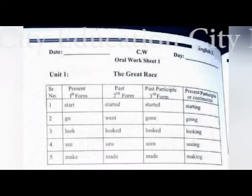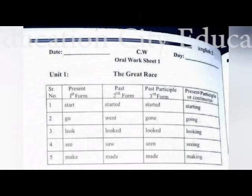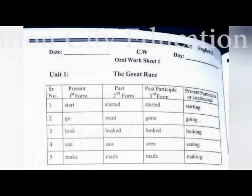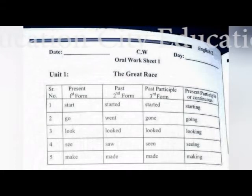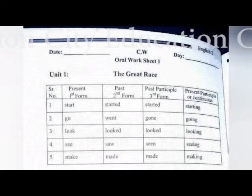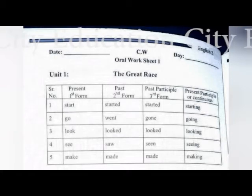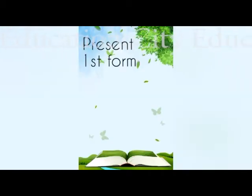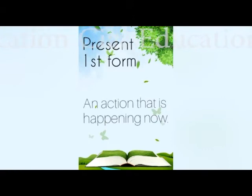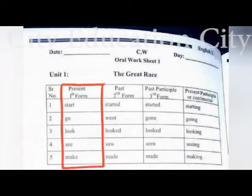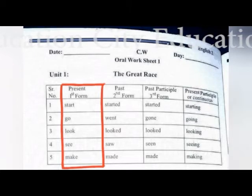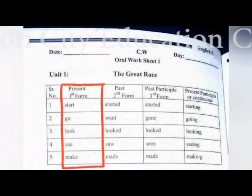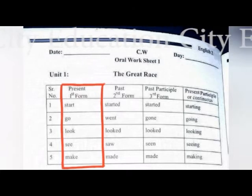In this block you can see the different forms of verbs. The first one is present, also called the first form of verb. Verb forms change depending on time. The present first form is an action that is happening now. Under the present first form there is: start, go, look, see, make. These five words are present verbs.